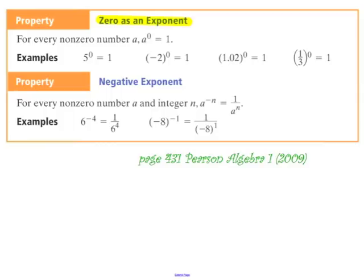We have some examples here. 5 to the zero is equal to 1 — a whole number to the zero power is 1. Negative 2 to the zero power is equal to 1. 1.02 to the zero is equal to 1. One-third to the zero is equal to 1. No matter what kind of number we have, as long as it's not zero, raising it to the zero power gives 1.